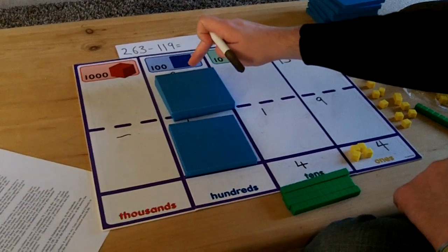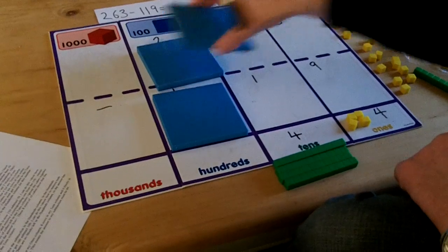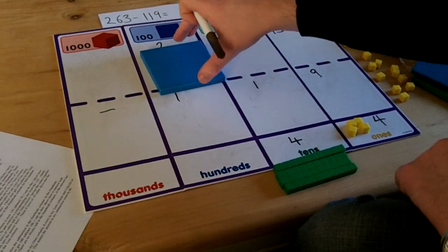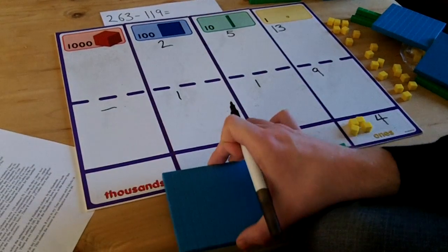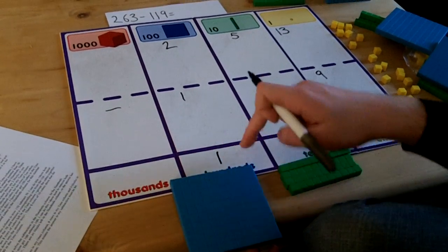Finally, in the hundreds column I have got 200 subtract 100. If I take away one block of 100 from each of these sections, that leaves me with 100, which I move down to the answer and represent that hundred with a 1.